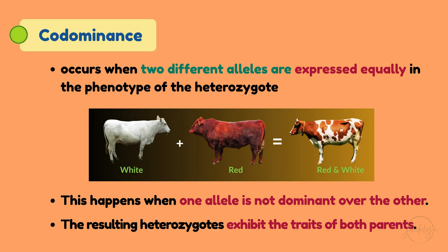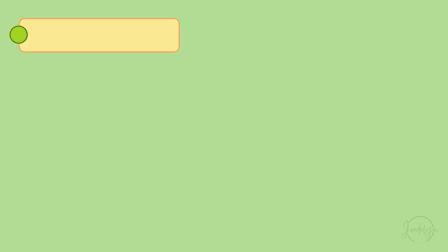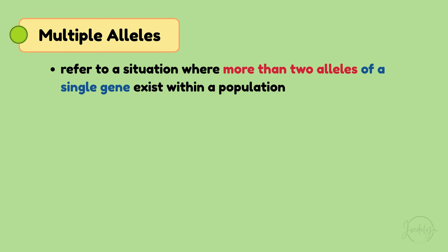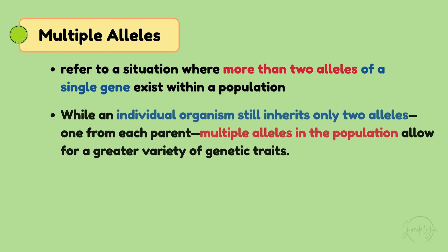A perfect example of this can be seen in some breeds of cattle. Now let's dive into multiple alleles, which refers to a situation where more than two alleles of a single gene exist within a population. While an individual organism still inherits only two alleles — one from each parent — multiple alleles in the population allow for a greater variety of genetic traits.